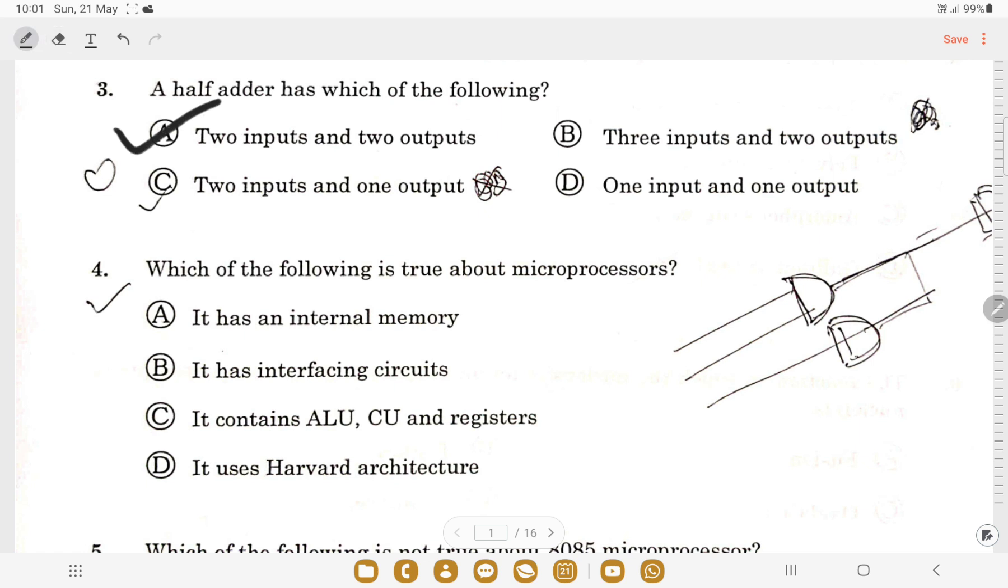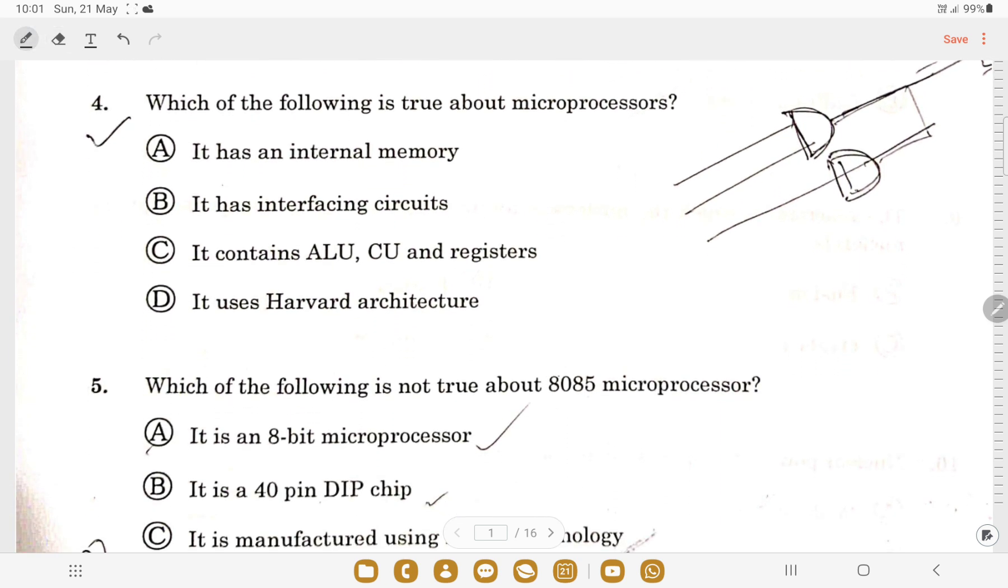Next question: which of the following is true about microprocessors? It has an internal memory - no, wrong. It has interfacing circuits - wrong. It contains ALU and registers - yes, it is correct. It is a Harvard architecture - no, it is a Von Neumann architecture. So option C is the correct answer.